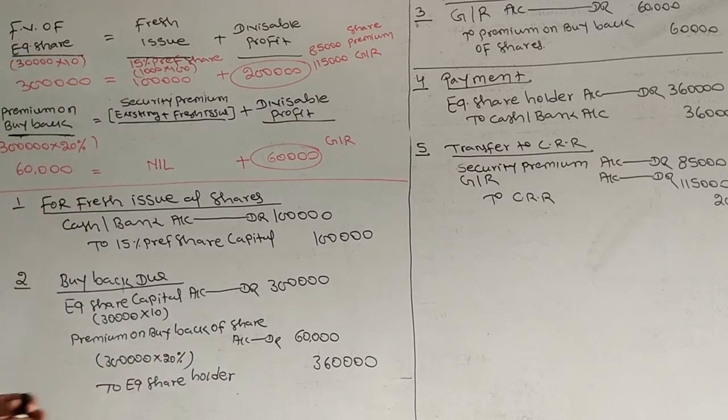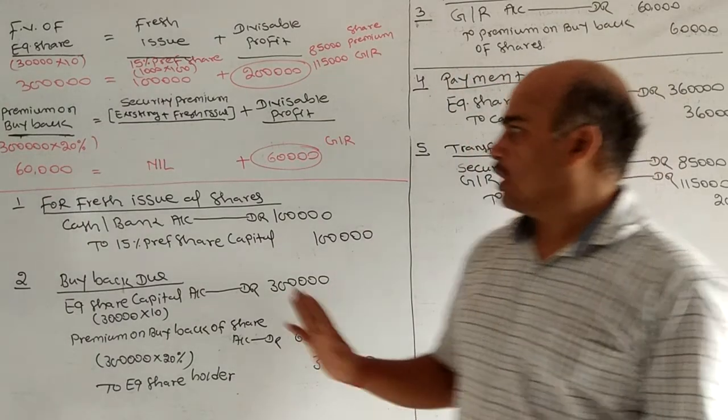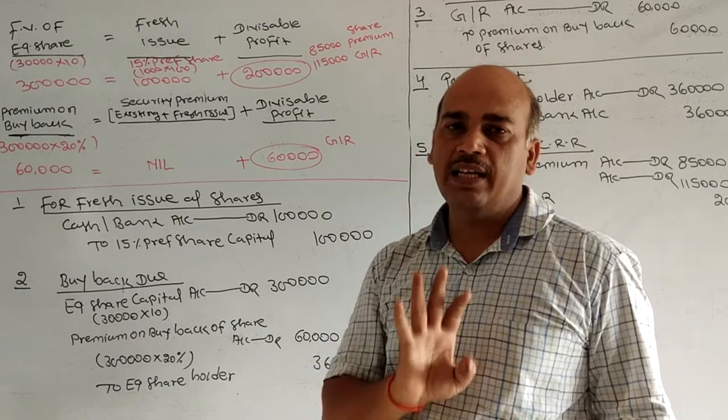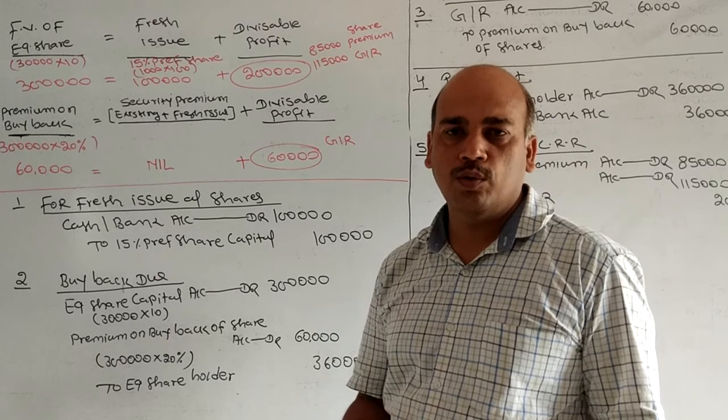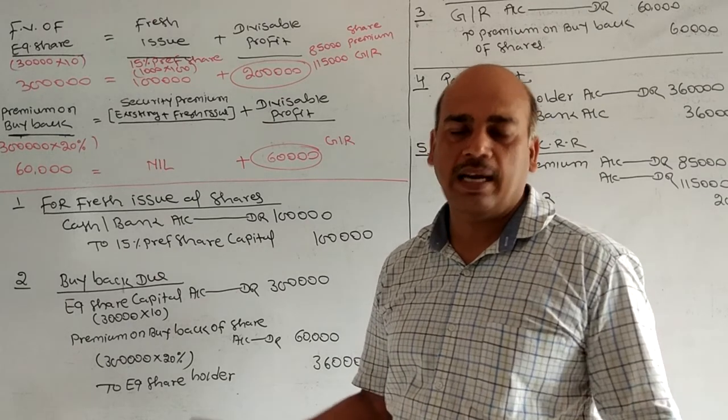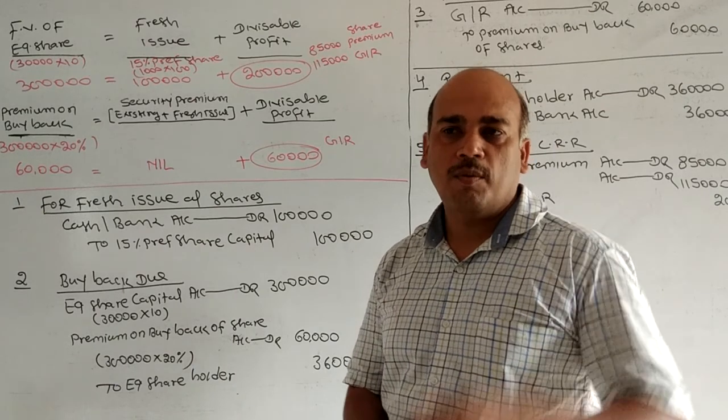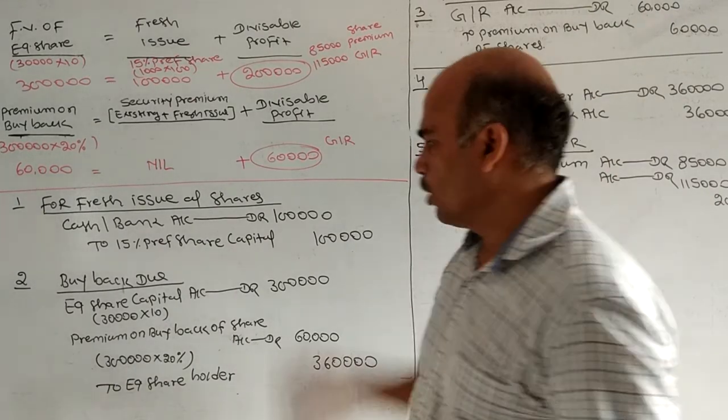I hope students everyone understood. So these are your questions - more or less, these are the types of questions. The six entries which can come frequently: sales of investment, fresh issue, buyback due, meeting the premium, payment, and transfer. Thank you very much.